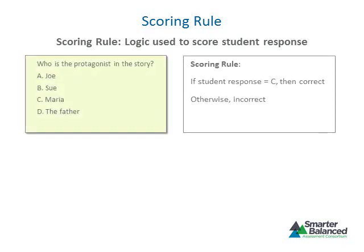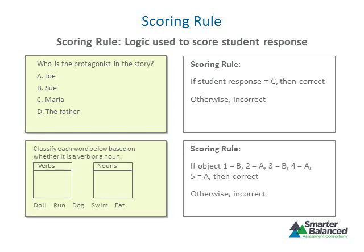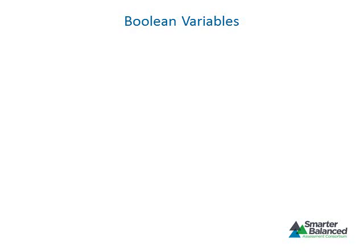In reality, all items have a scoring rule. The scoring rule for a selected response item states that if the student's response is identical to the correct response, the student receives one point; otherwise, zero points. Similarly, for a drag and drop item, the scoring rule compares the location of each object with its correct location, and the student is awarded one or more points based on the number of correct categorizations made. Many technology-enhanced items require an item writer to set a value for a boolean—a variable with one of two possible values, true or false—to indicate whether a specific feature should be turned on or off.